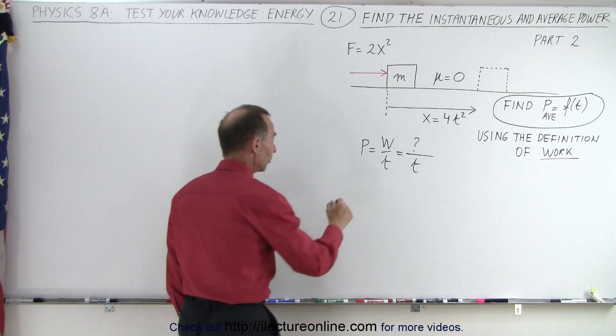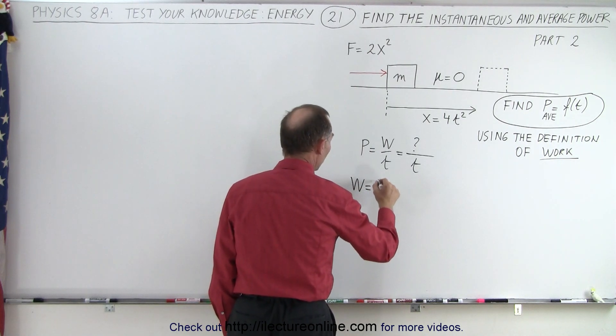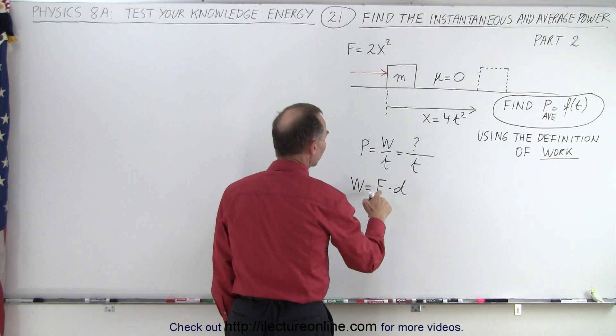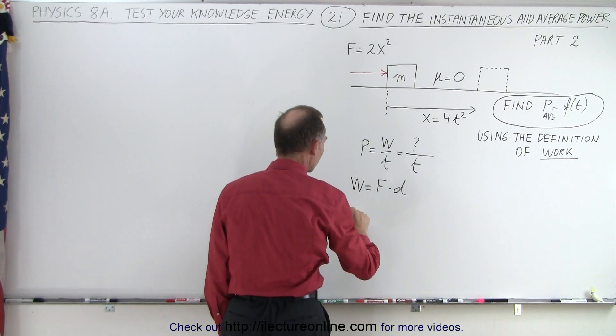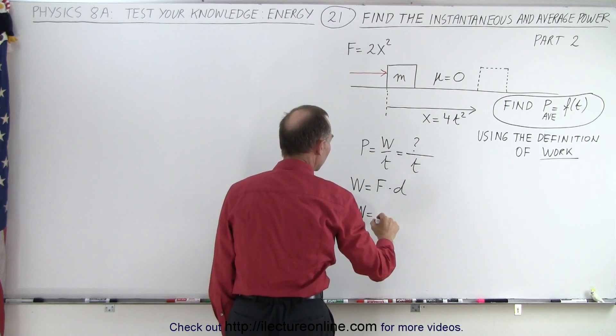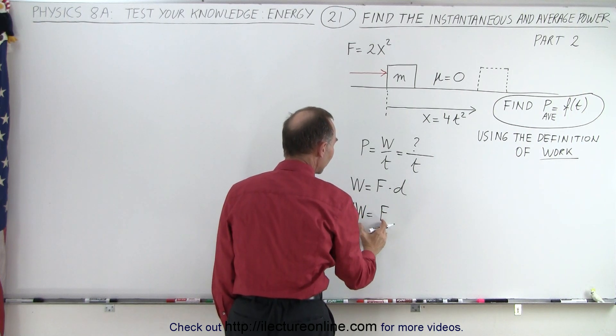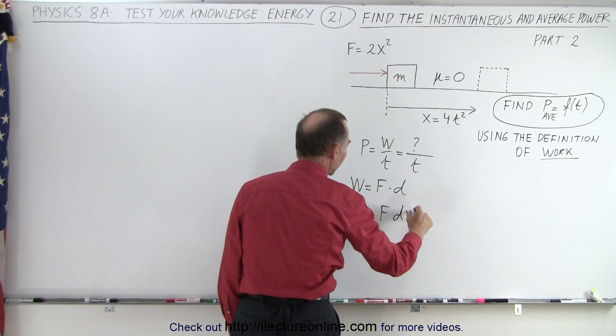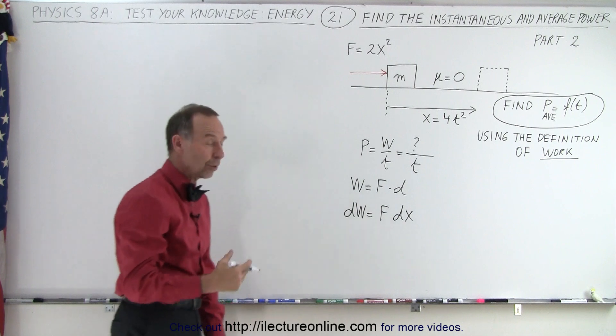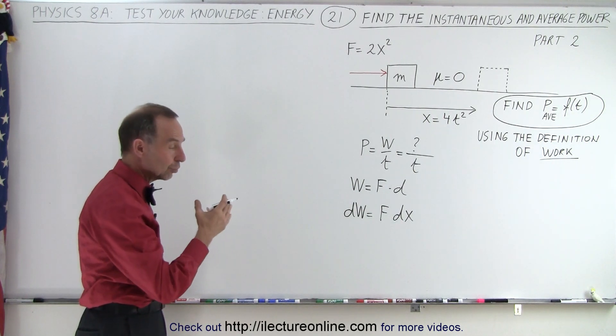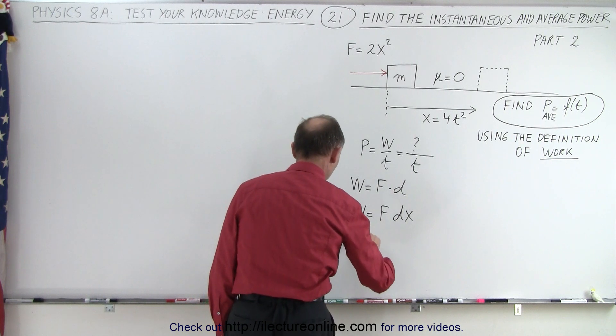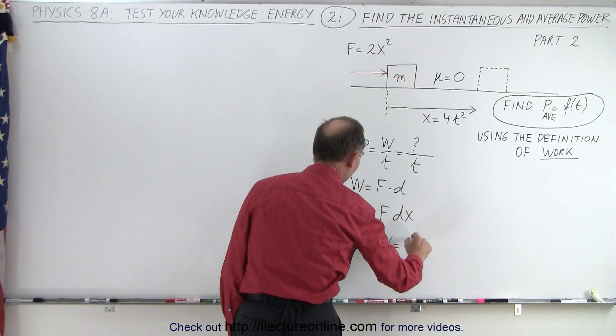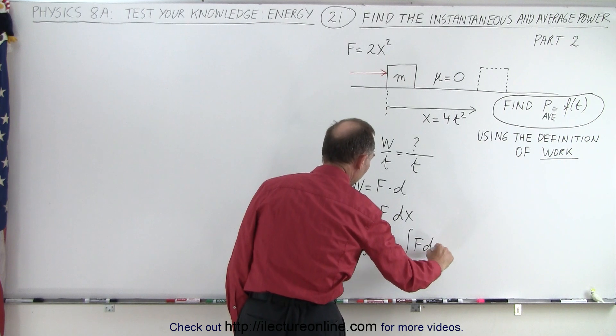Well, the definition of work is that work equals force times distance, but since the force is a variable force, what we need to do is say that a small amount of work, dW, is equal to the force at any point in time times a small amount of displacement. So we can go ahead and find the total work done using this definition, which means that work is equal to the integral of all the little dWs, which is equal to the integral of force times dx.